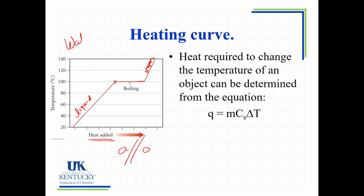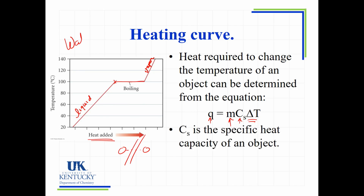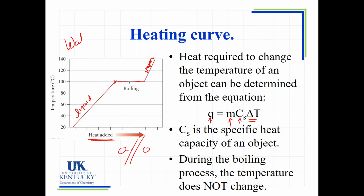On the heating curve, the sloped regions are where temperature is changing — determined by the mass, the heat added, and a value called specific heat capacity (each substance has its own). The flat region is where a phase change (like boiling) is occurring and temperature stays constant. While a substance is undergoing temperature change it's not changing state, and while it's changing state the temperature is not changing.